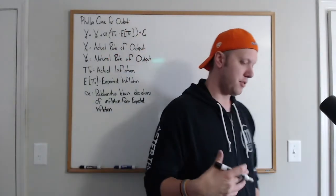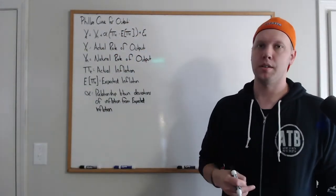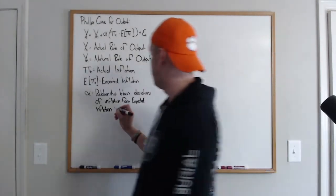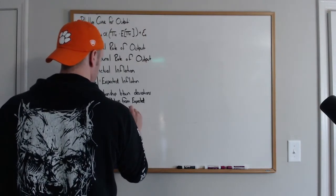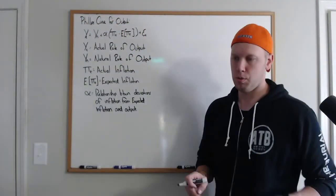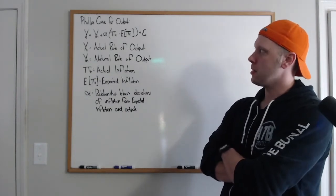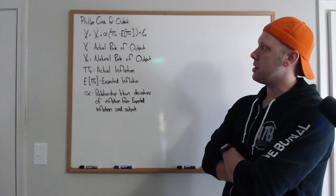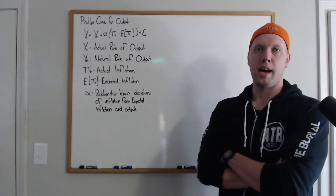Alpha tells us the relationship between deviations of actual inflation from expected inflation and their effect on production. We can think of alpha as the slope of the aggregate supply curve. In the real business cycle model, the aggregate supply curve was vertical — but that's no longer the case here.